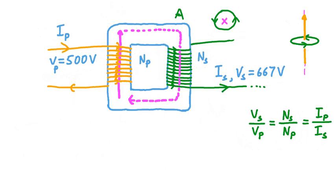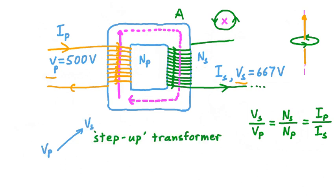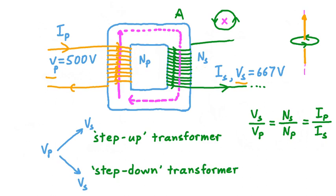Going back to our discussion of voltage, the primary voltage is less than the secondary voltage. When this happens, it means the function of the transformer is to raise the voltage from the primary to the secondary coil. When Vs is greater than Vp, the transformer is described as a step-up transformer. The opposite can happen as well: when the secondary voltage is less than the primary voltage, the transformer is called a step-down transformer.